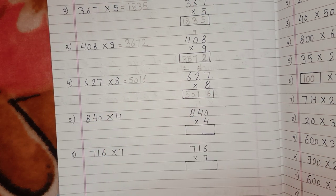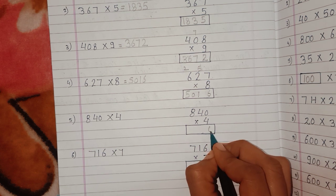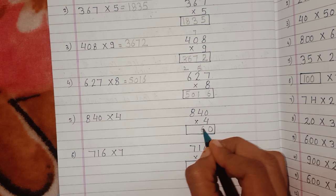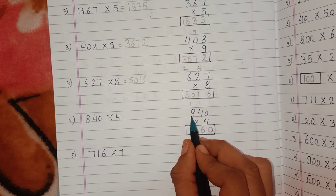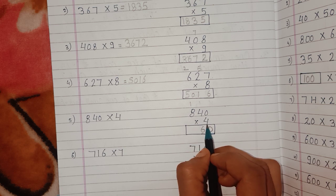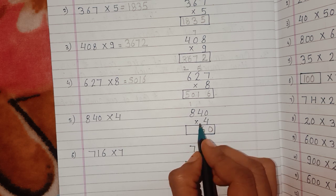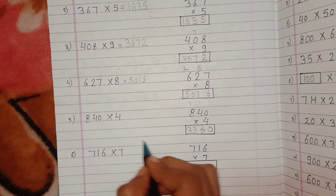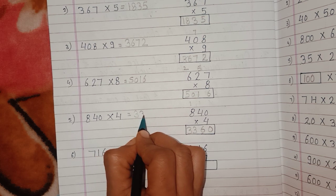Next question: 840 multiplied by 4. 4 times 0 is 0. 4 times 4 is 16, 6 here, carry 1. And 4 times 8 is 32, plus 1 is 33. So our answer for this question is 3360.